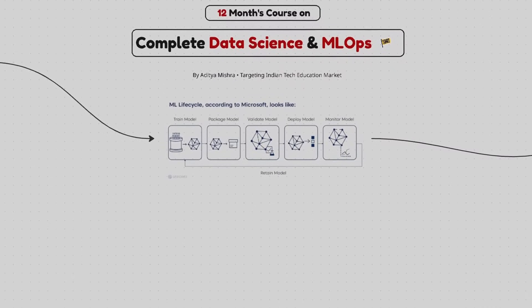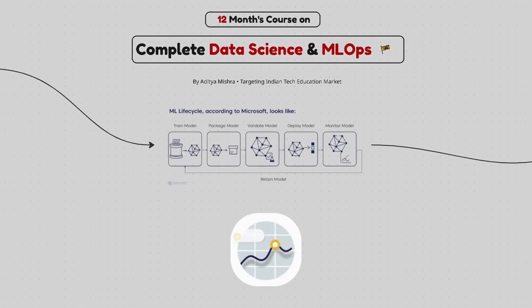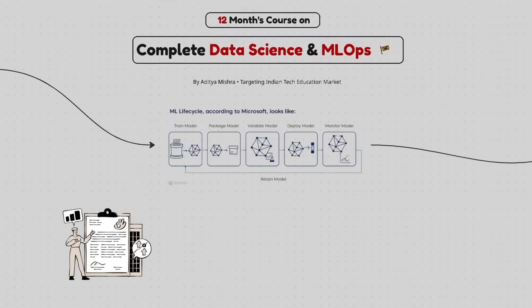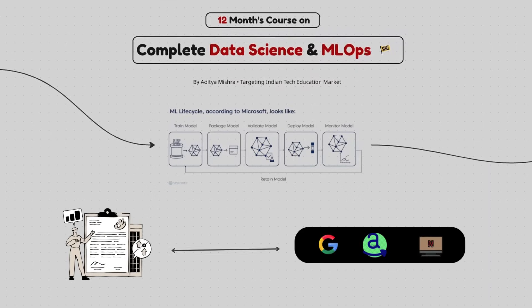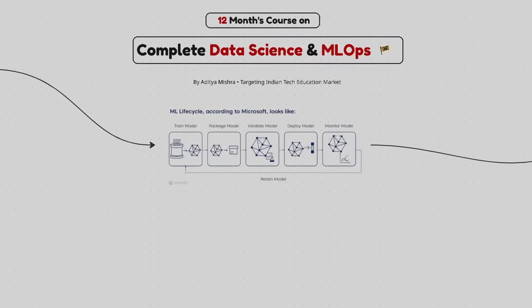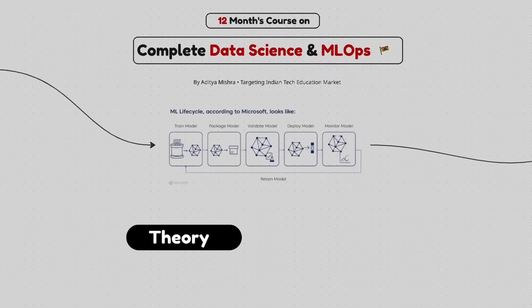So are you ready to completely transform your career trajectory? In the next 20 minutes, I am going to show you exactly how you can become a complete data science and machine learning operations expert in just 12 months. And here's the most important part. The roadmap that I have prepared is completely industry aligned for every student, whether you are in first year, second year, or even fourth year. This means you won't be just studying theory but learning the exact skills that the industry demands today.